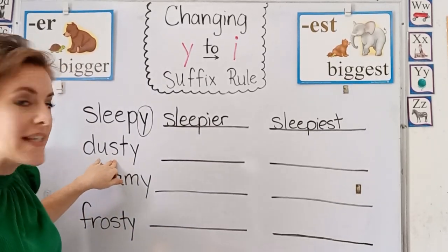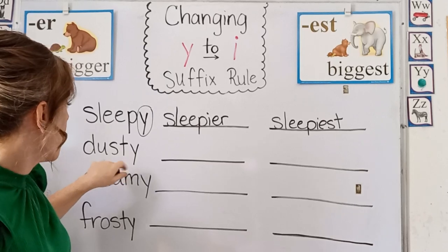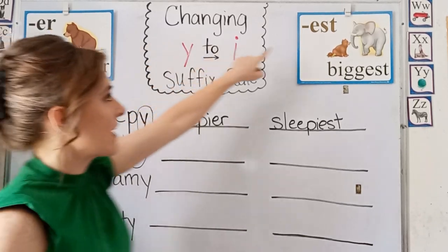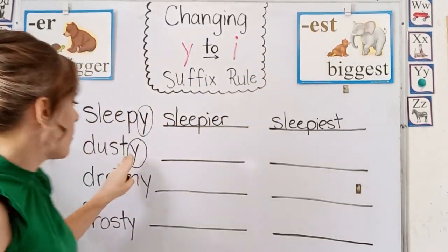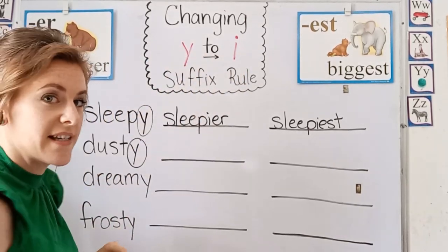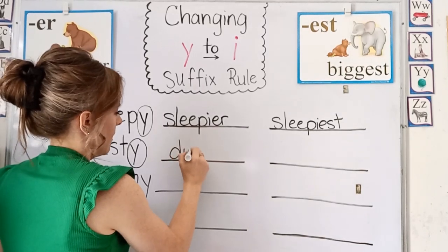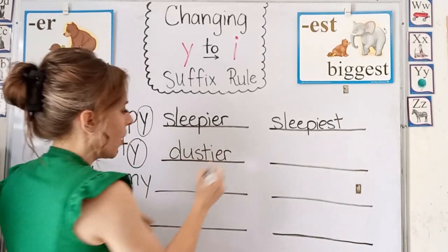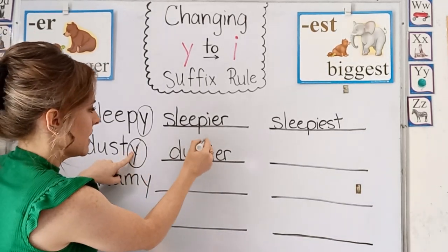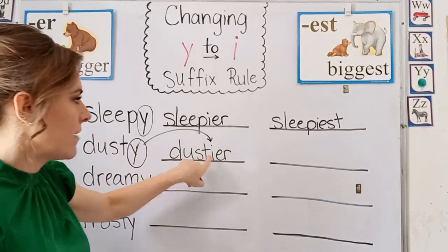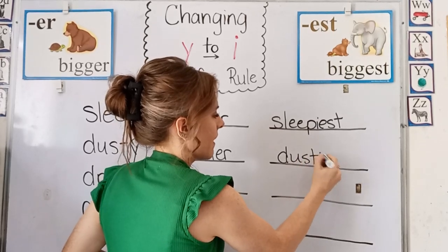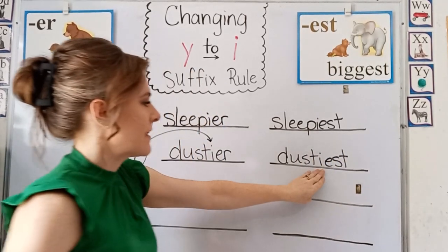Here we have dusty. We have the Y at the end and we're going to add suffixes that begin with an E, so we are going to change the Y to an I. Dustier. We took the Y and we changed it into an I. And here we have dustiest.